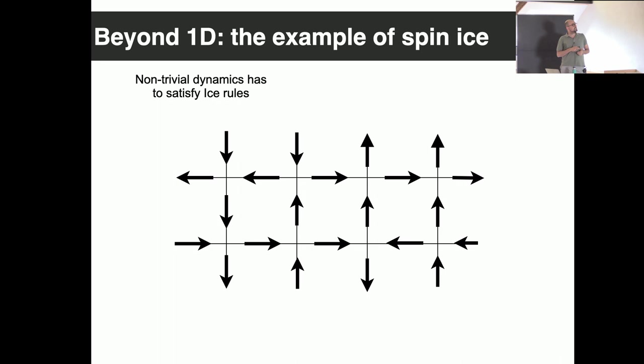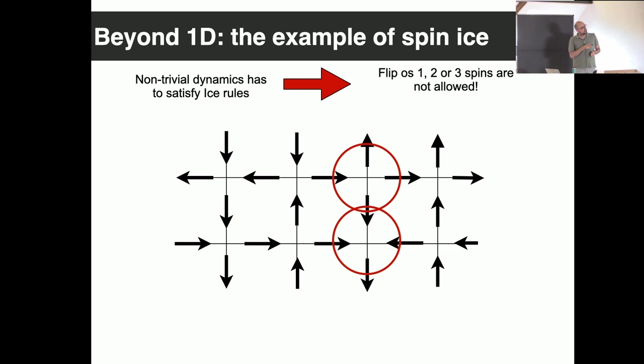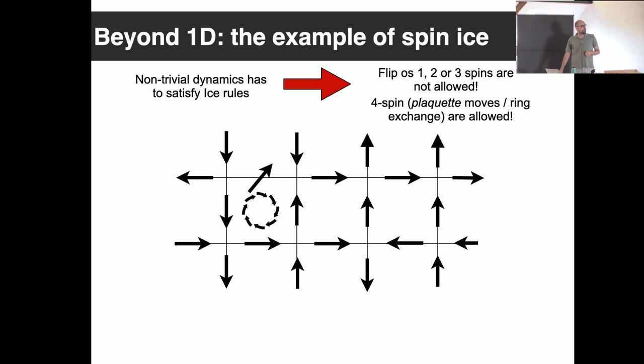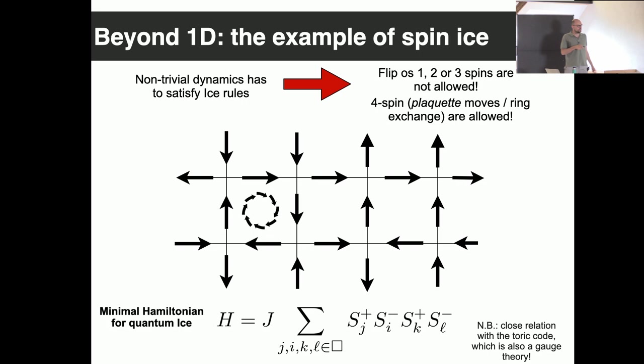To have a model we can refer to as a toy model, I wanted to present a summary of what spin ice is. Spin ice is a model Hamiltonian with non-trivial dynamics acting on the Hilbert space of spin one-halves on the bonds of a square lattice. This Hilbert space is complemented by the ice rules: the magnetization close to an edge has to sum to zero. You can see there are two arrows in and two arrows out.